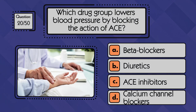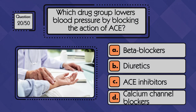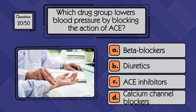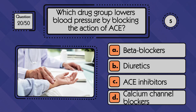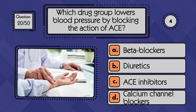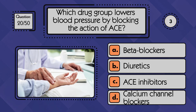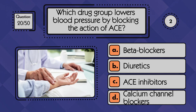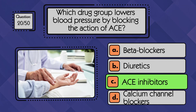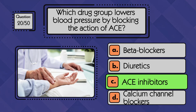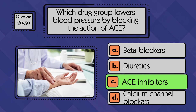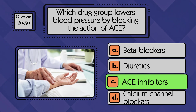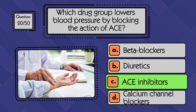Which drug group lowers blood pressure by blocking the action of ACE? ACE inhibitors lower blood pressure by blocking the enzyme responsible for producing angiotensin II.